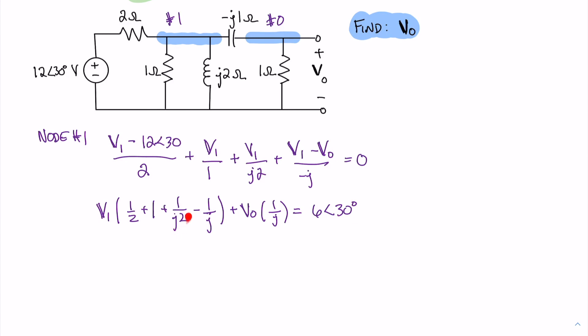When we look at this equation, we can see that we have a denominator of J2 as our largest value in our denominator. That value works for simplification of this equation. If we multiply both sides by J2, we will significantly reduce the complexity. Distributing out that J2, we get V1 times (1 plus J2 plus 1 minus 2) plus V0 times 2 equals J2 times 6 angle 30.